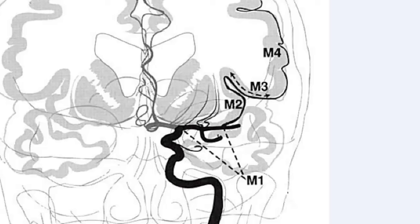Looking at the diagram, when we start the middle cerebral artery at the carotid terminus, we have the MCA shown in black and the ACA in gray. From the origin of the middle cerebral artery — the MCA stem — all the way forward to the point at which the branches start to curve upwards in the insular portion, that whole portion of the artery, even with branch points, is known as the M1 segment.